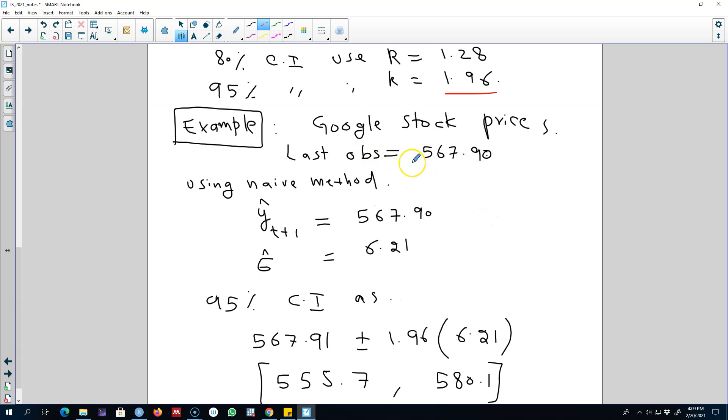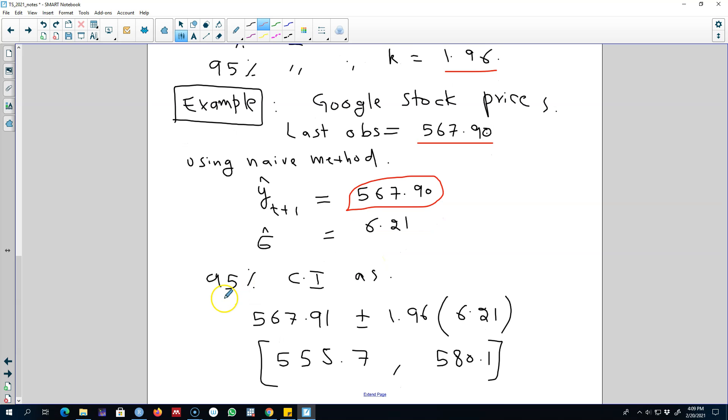For example, if we are using Google stock prices and our last observed value is this, and we are using a naive method, obviously our forecast for the next period will be this value. So we can go ahead and calculate sigma, which in this case is 6.21.